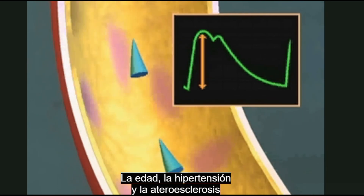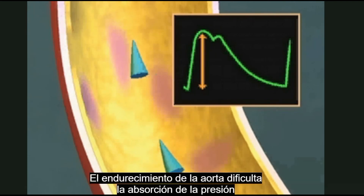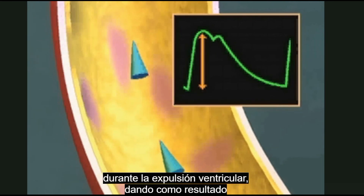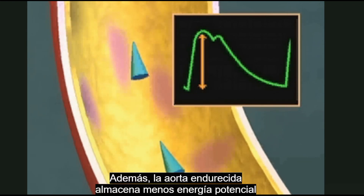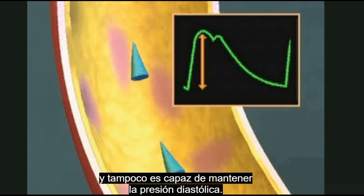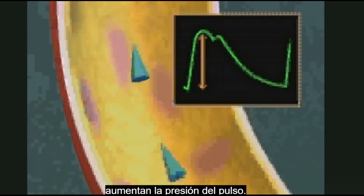Aging, hypertension, and atherosclerosis reduce the aorta's elasticity. The stiffened aorta is less able to absorb pressure during ventricular ejection, which results in a higher systolic pressure. In addition, the stiffened aorta stores less potential energy and cannot maintain diastolic pressure as well. Higher systolic and lower diastolic pressures widen the pulse pressure.